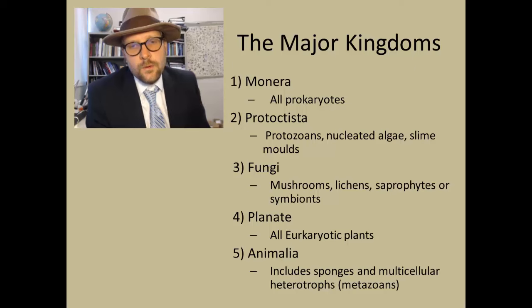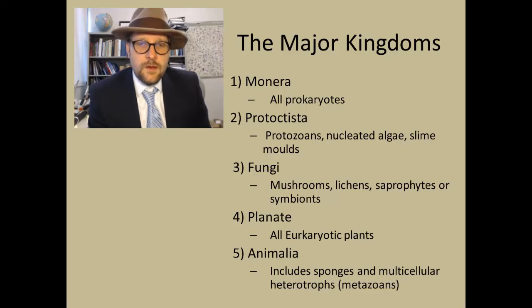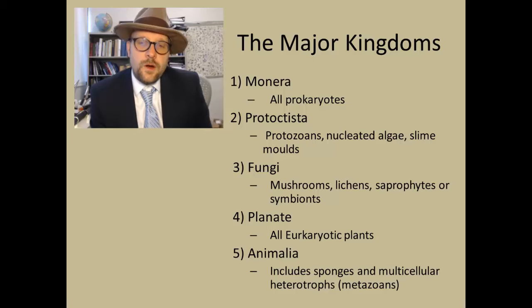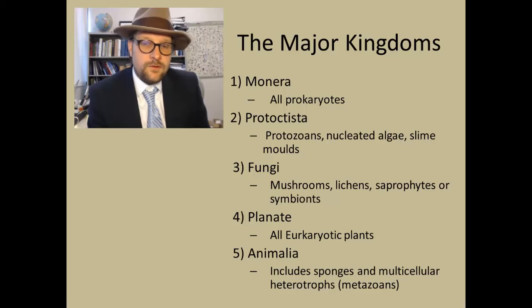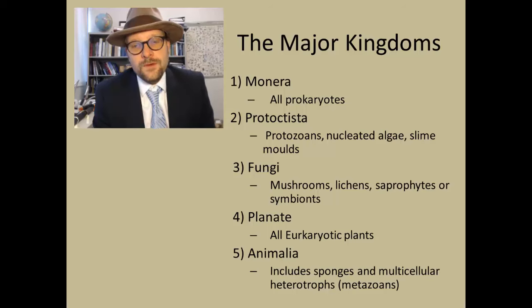The major kingdoms of life: first, Monera — sometimes eubacteria and archaea are placed in separate kingdoms — including all prokaryotic organisms. Second, Protistia: protozoans, nucleated algae, protists, slime molds — all single-celled organisms. Then we get into multicellular organisms: Fungi, including mushrooms, lichens, and symbionts. Plants are placed in their own kingdom — all eukaryotic plants. And then Animals, including sponges and multicellular heterotrophs — predators, herbivores, not autotrophs — including all the metazoans with multicellular cells.